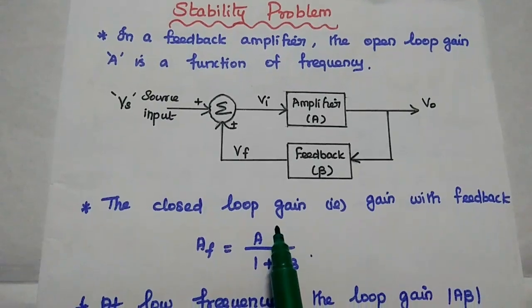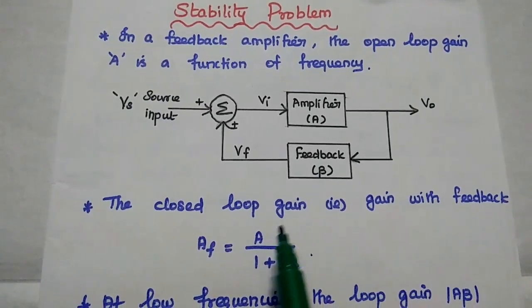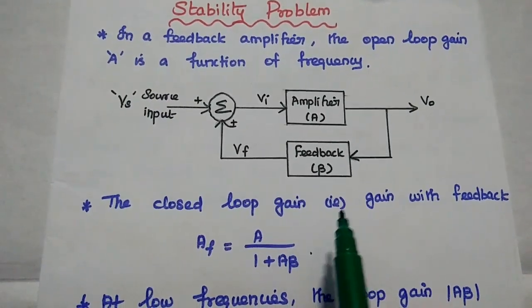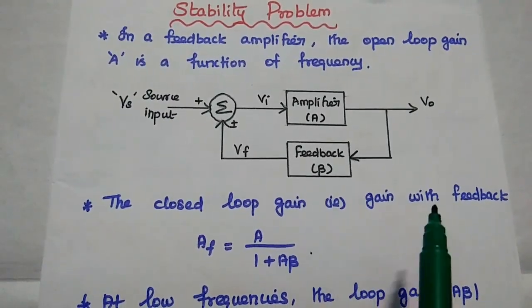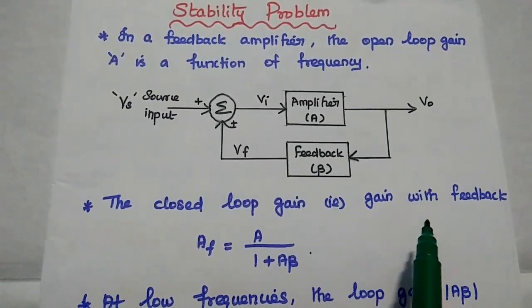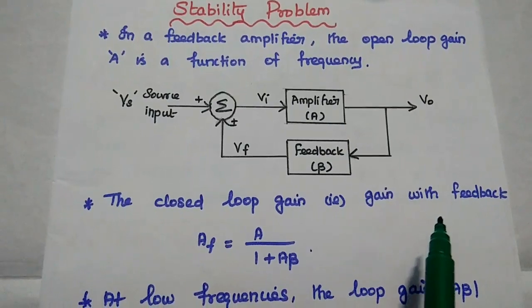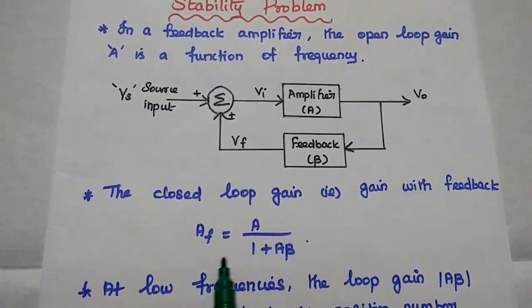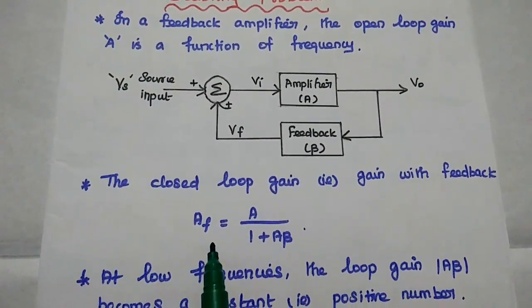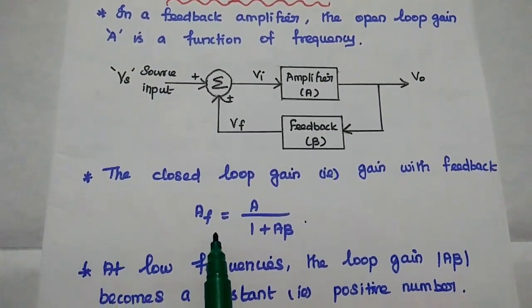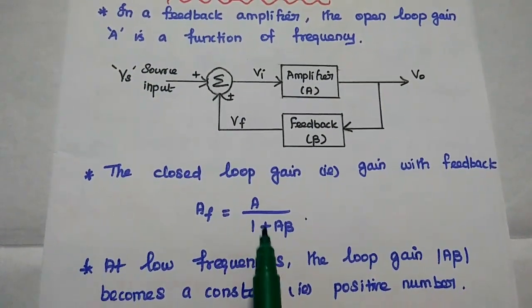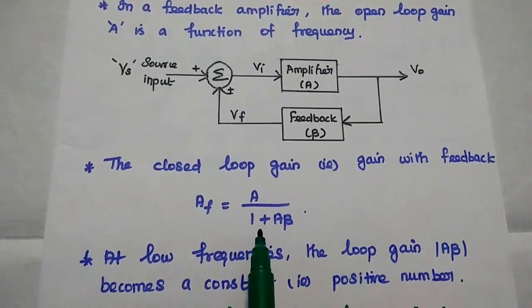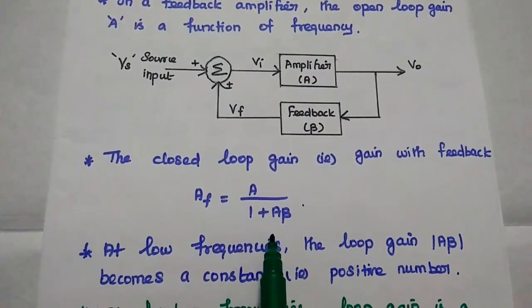Next we consider the closed loop gain, that is the gain with feedback in the amplifier. That is represented as Af equals A divided by 1 plus A·beta.